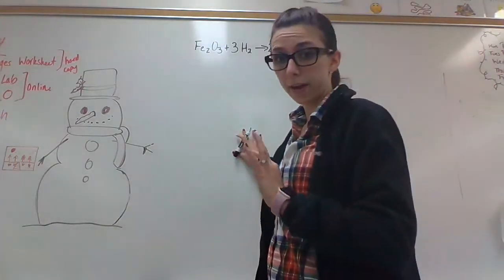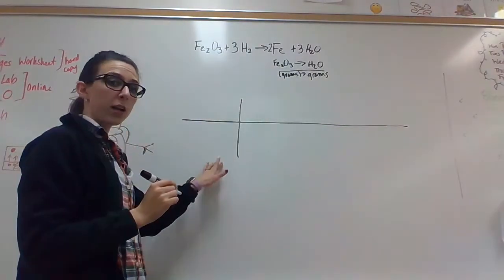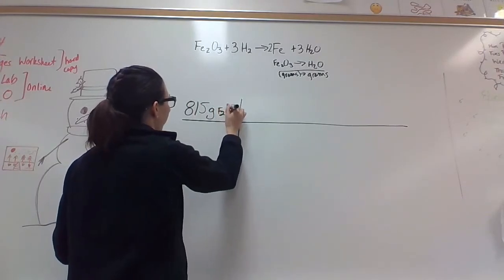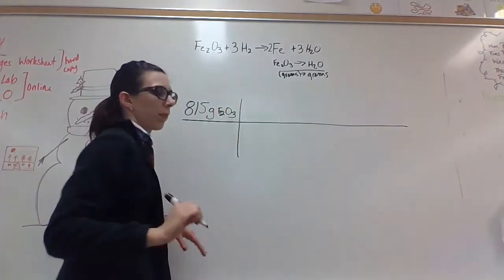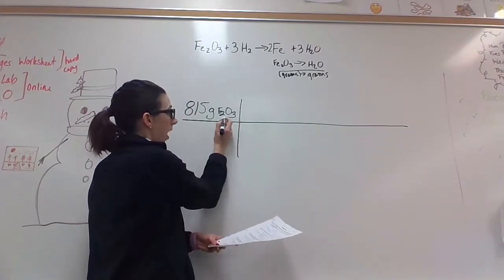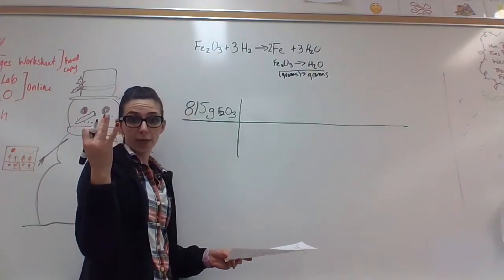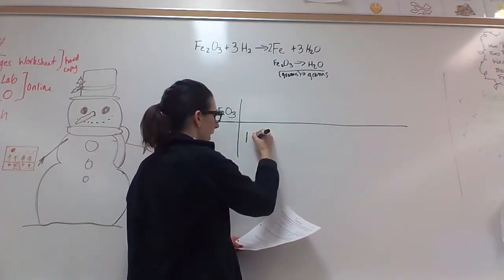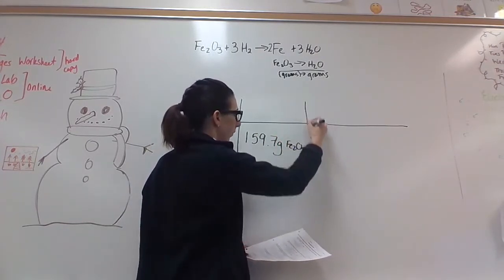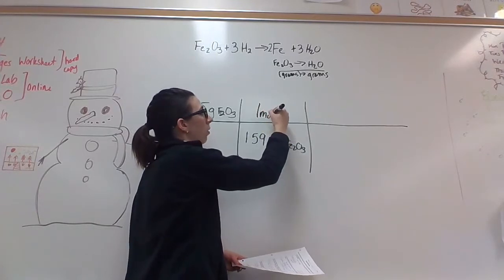To start us off, we're going to use the given. We're going to make our chart — this chart is going to be a little bit longer. We're starting with 815 grams of iron oxide, Fe2O3. Then from that, you want to find the molar mass of Fe2O3, which means you're adding together two irons and three oxygens. That comes out to 159.7 grams of Fe2O3, which is equal to one mole of iron oxide.